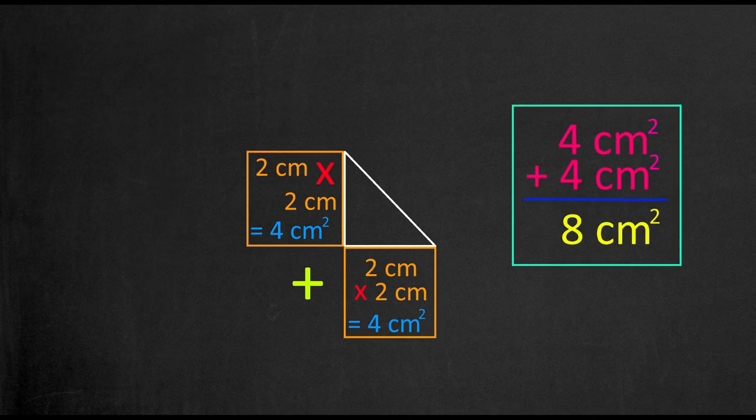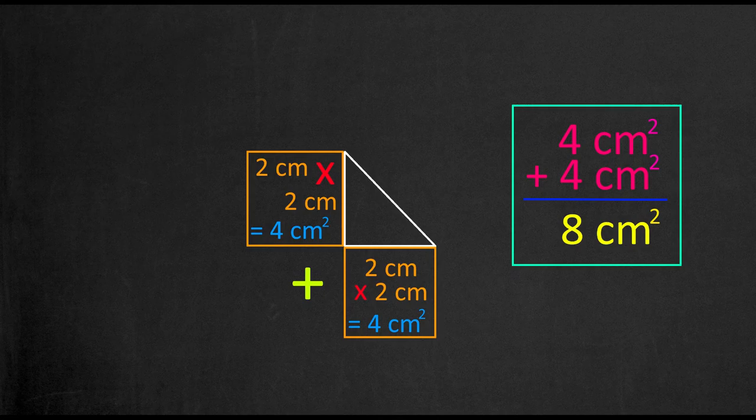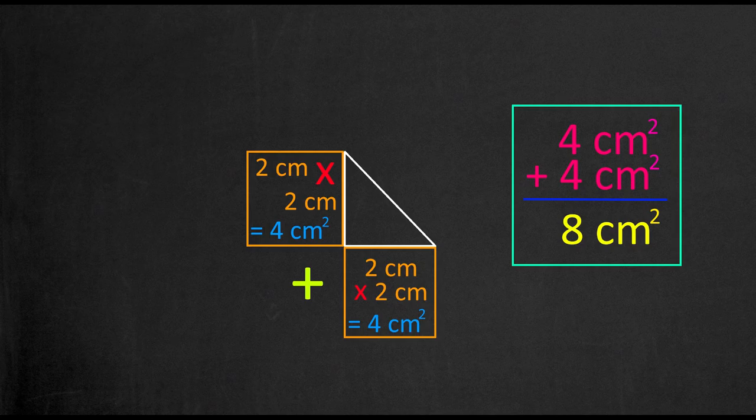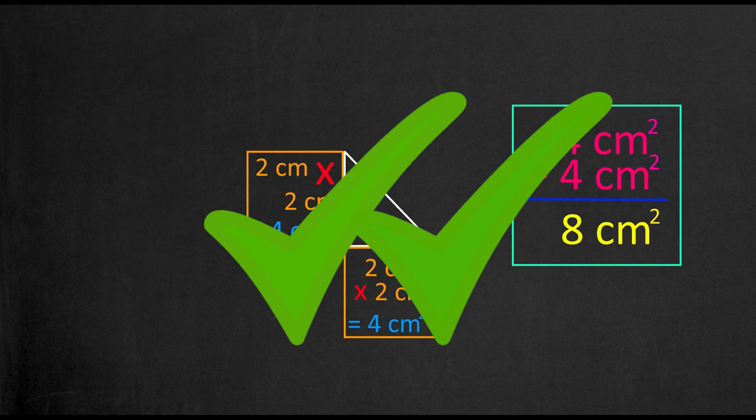So, we would add 4 cm squared to 4 cm squared, giving us a total area of 8 cm squared. So amazingly, you can now see that when you square both legs of a triangle and add them up, the sum is equal to the hypotenuse also squared. Double check your answer if you don't believe me.